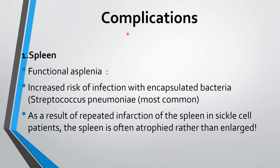Coming to complications under clinical manifestation — the third heading. Complications can occur in every organ. For the spleen: functional asplenia with increased risk of infection, with Streptococcus pneumoniae as the most common organism. Due to repeated infections and repeated infarction, the spleen in sickle cell patients is often atrophied rather than enlarged — unlike other hemolytic conditions where the spleen is enlarged.